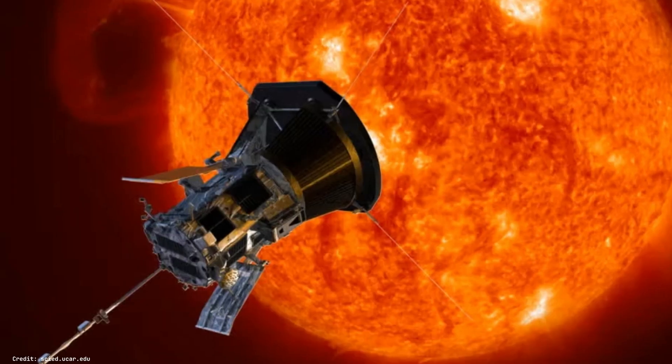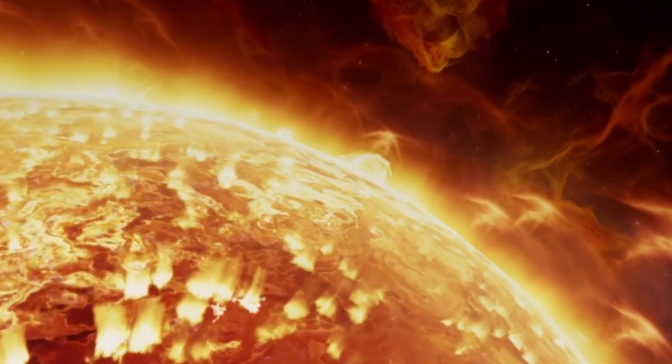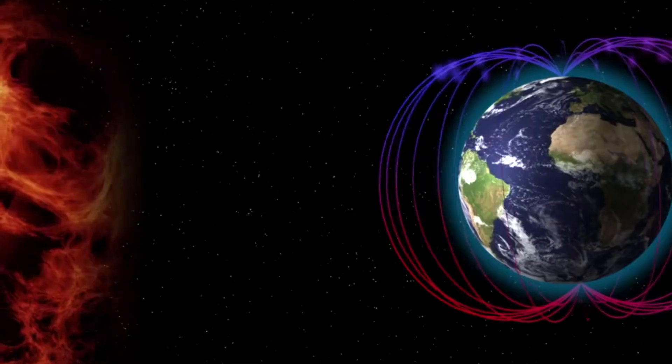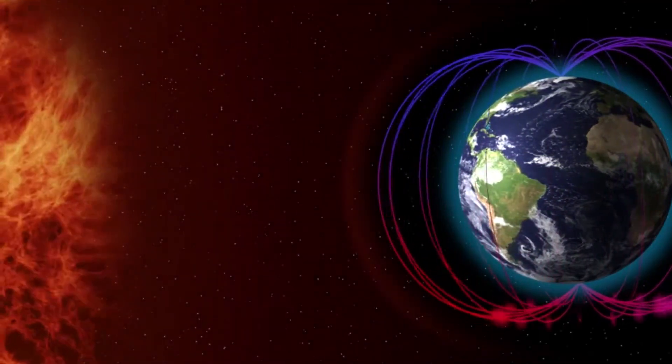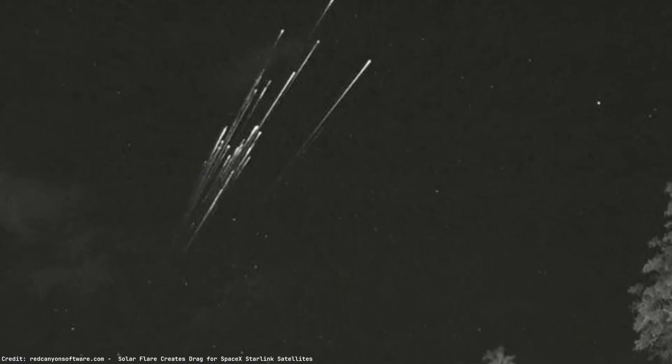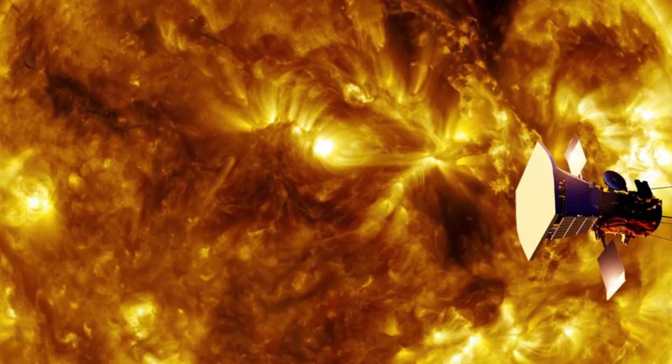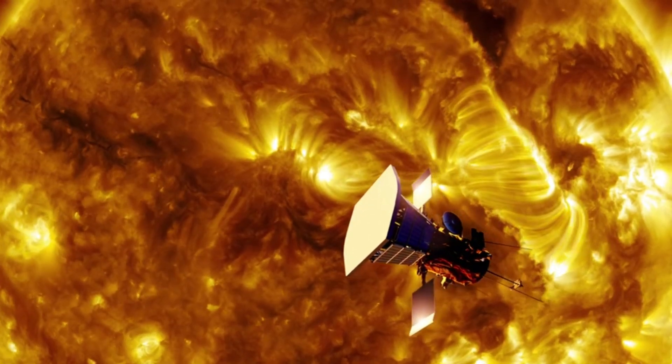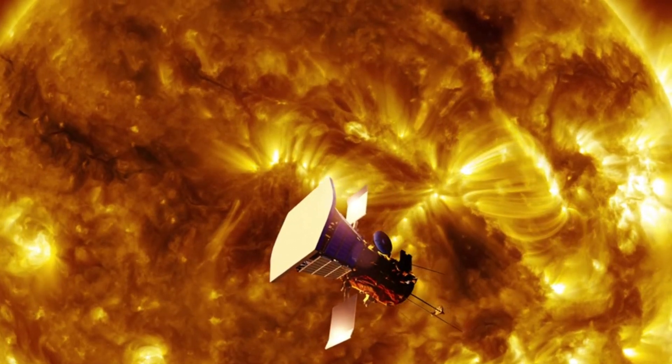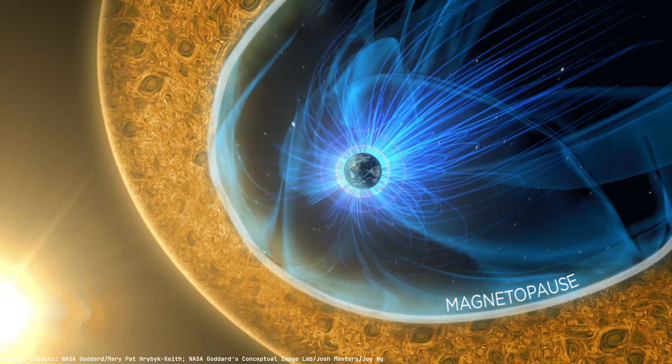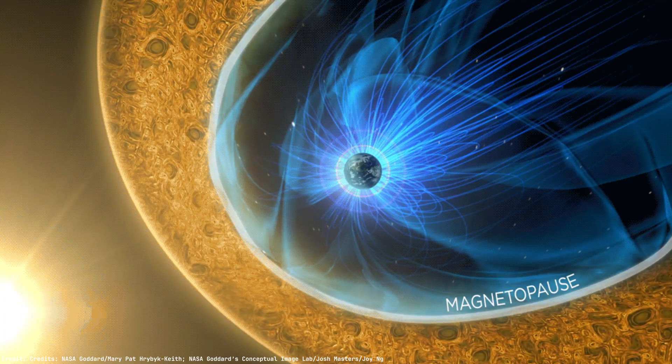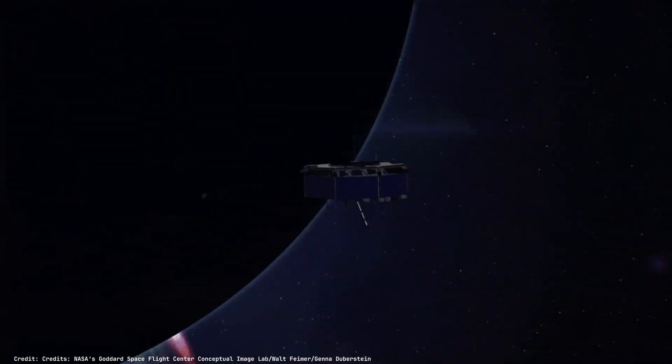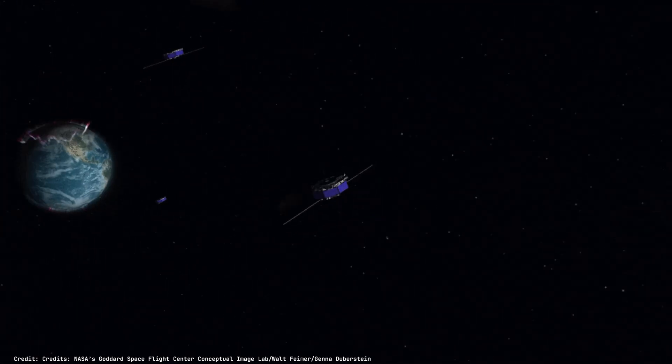In February 2022, something wild happened. A solar storm, nothing extreme, just a moderate one, slammed into Earth's magnetic field. The result? 40 Starlink satellites got knocked out of orbit and burned up in the atmosphere. Just like that. It was a wake-up call. Our high-tech space systems are way more vulnerable to solar tantrums than we thought. But here's the exciting part. Scientists are fighting back with cutting-edge tools. They're using machine learning to scan the sun's magnetic data, hunting for patterns that could warn us when a flare is about to erupt. Think of it as space weather forecasting, powered by AI.